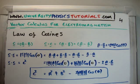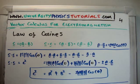So we can rewrite that: c squared equals a squared plus b squared minus twice the magnitude of A multiplied by the magnitude of B times the cosine of the angle in between. And that is the law of cosines.